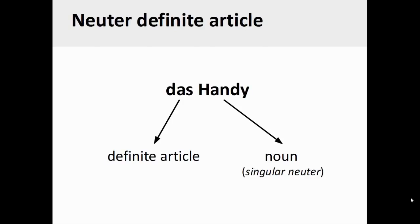The German noun Handy, or mobile phone, is a singular neuter noun. Therefore, its definite article is always das.